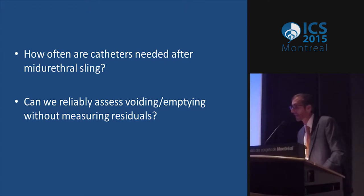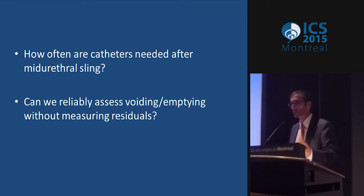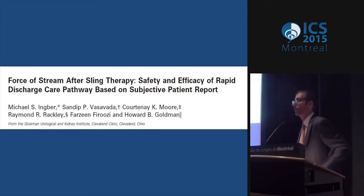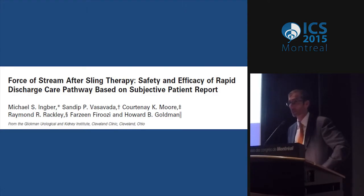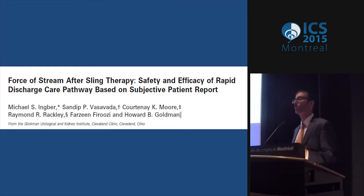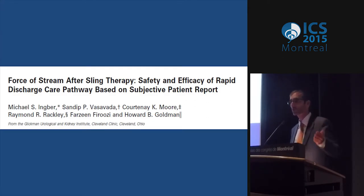How often are catheters needed after a sling? About 10 to 15 percent of the time, because the patient can't void well right away. Women can often describe how fast their urinary flow is compared to previously — if you go to the bathroom today and tomorrow with a full bladder, it's usually about the same. We see women who've had a sling and come back with OAB and tell me they can barely pee — they used to have a strong stream and now it's really weak.